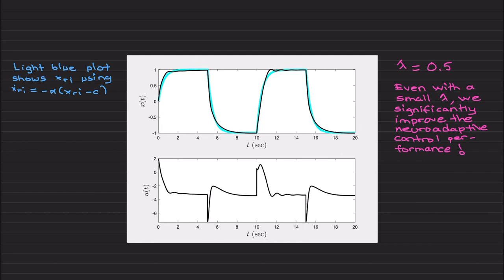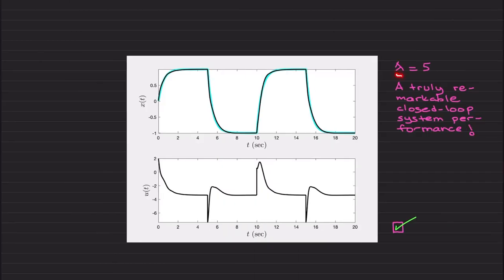But if you increase lambda to 5, you basically have a truly remarkable closed-loop system performance which precisely matches as accurate as possible with the ideal closed-loop system performance shown in light blue. You can increase a little bit more to get rid of this a little bit, but in general this is an ideal performance, and to be honest, this is also such a nice performance with 0.5.